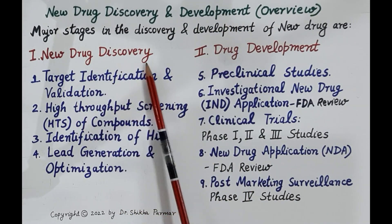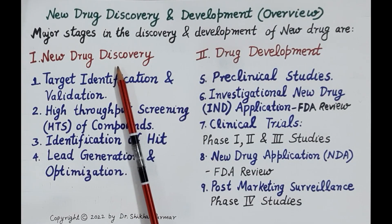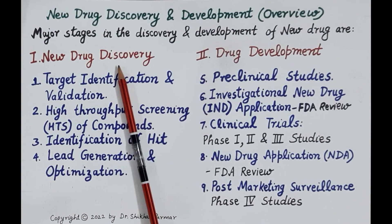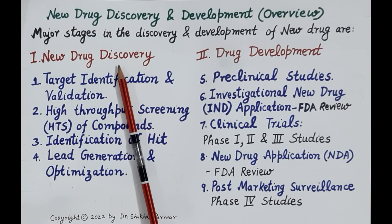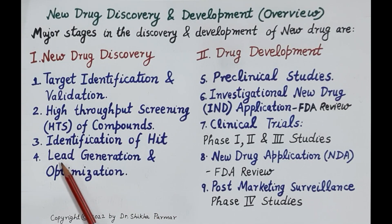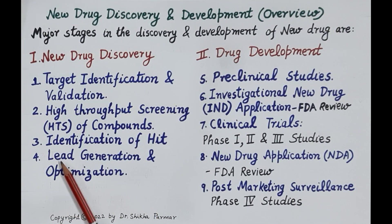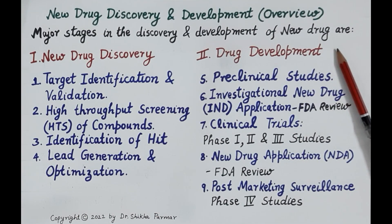The entire process of new drug discovery and development has two main stages. The first stage is new drug discovery and the second stage is new drug development. From 5,000 to 10,000 active compounds screened, potential candidates called leads are identified during drug discovery. The entire process of new drug discovery takes around three to five years.